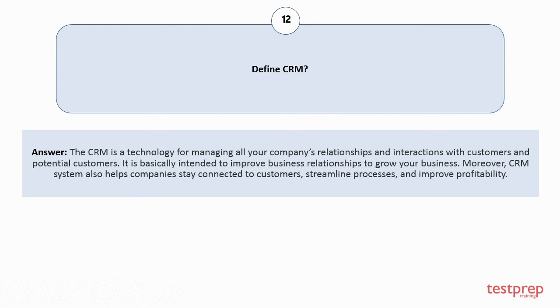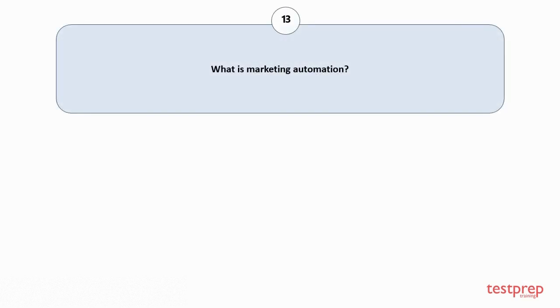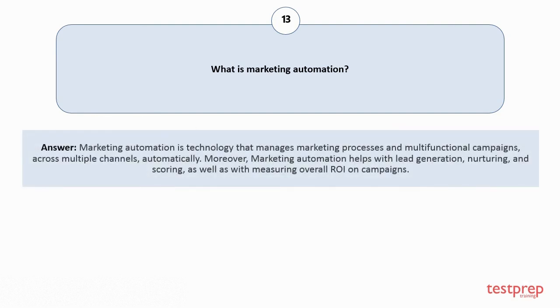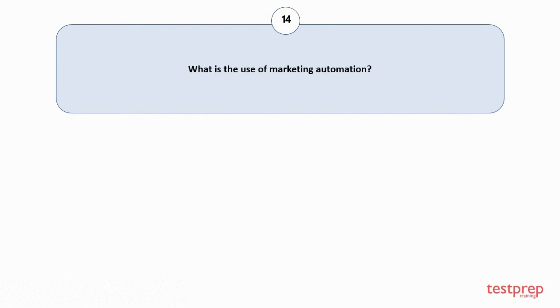Question number thirteen: What is marketing automation? Marketing automation is technology that manages marketing processes and multifunctional campaigns across multiple channels automatically. Moreover, marketing automation helps with lead generation, nurturing, and scoring, as well as with measuring overall ROI on campaigns.